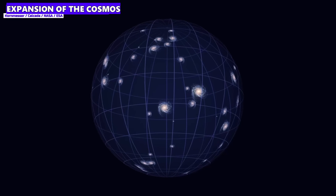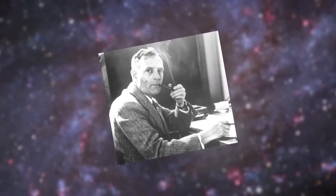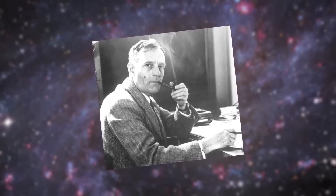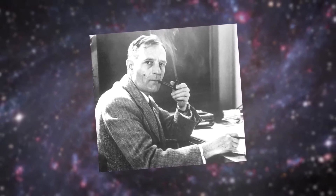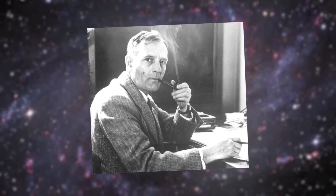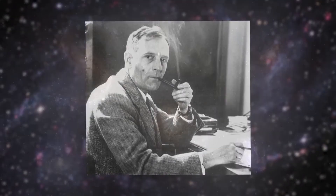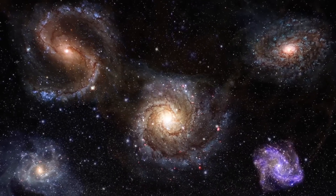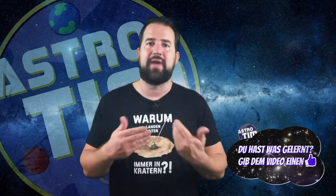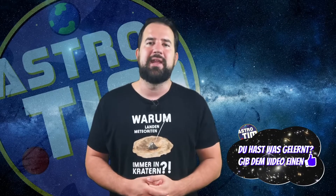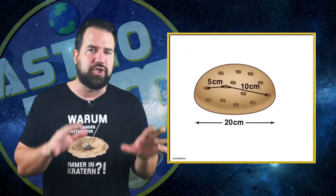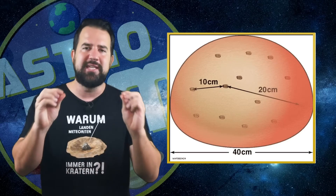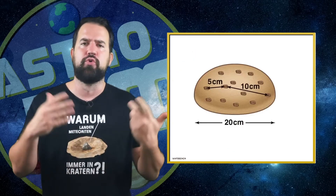Edwin Hubble, the famous American astronomer after whom the Hubble telescope is named, made a decisive contribution to developing the idea of the expanding cosmos in the first place. In the 1920s, he observed that most galaxies were moving away from us. This observation led to the formulation of Hubble's law, which states that the speed at which a galaxy is moving away from us is proportional to its distance — or in bakery terms, the speed at which a raisin moves away from the center of the cake is proportional to the distance to the center of the cake.